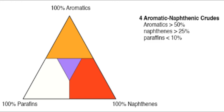You see the boundaries for this type of crude: aromatics greater than 50 percent, naphthenes greater than 25 percent, paraffins less than 10 percent in type 4 crude oils. See the horizontal line right in the middle of the triangle, which designates the first boundary — that is aromatics greater than 50 percent.